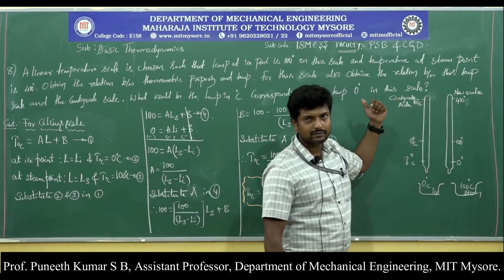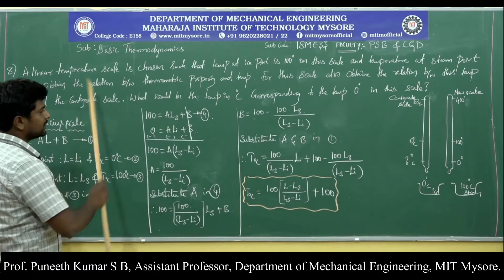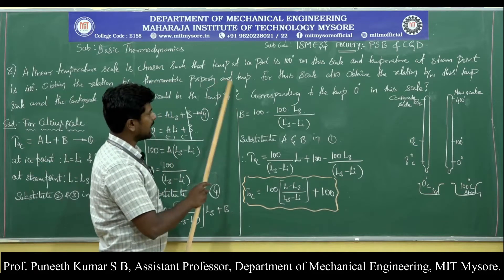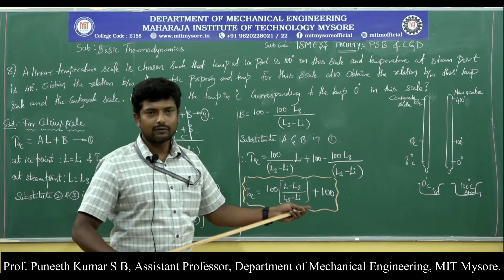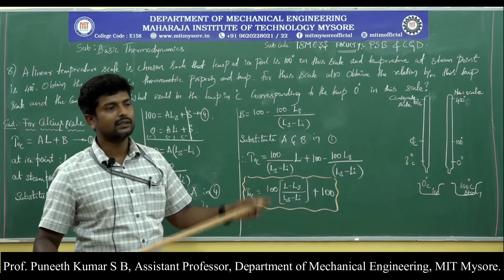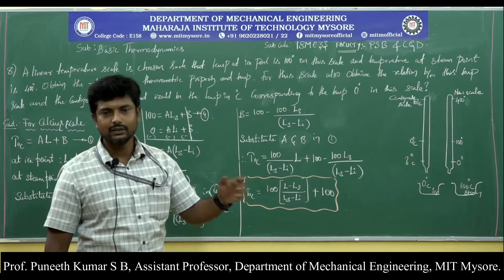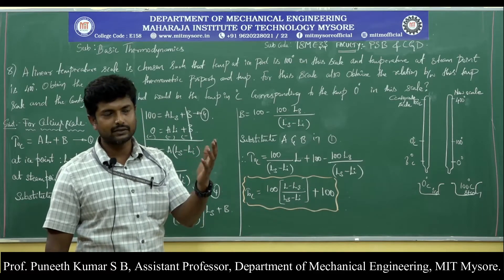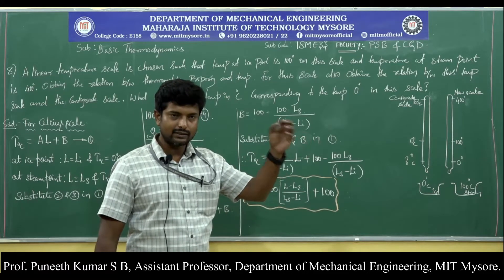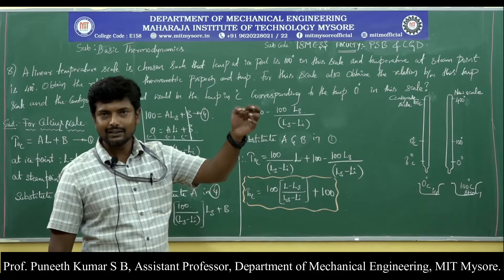This is how the new scale shows its reading — 100 degrees at ice point and 400 degrees at steam point. Now the author is asking us to obtain the relation between the thermometric property and temperature. We have already discussed in the earlier class what is thermometric property. To measure the temperature, the temperature on its own cannot indicate the value, so we use a thermometer. For example, in a mercury thermometer, we read the temperature by looking at the markings.